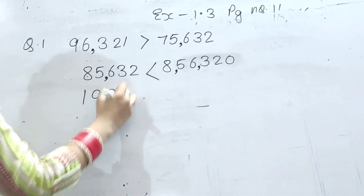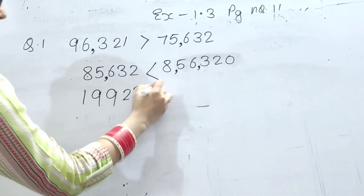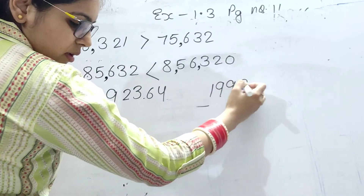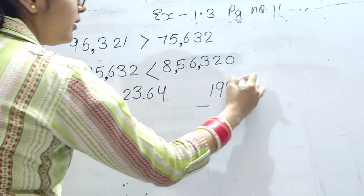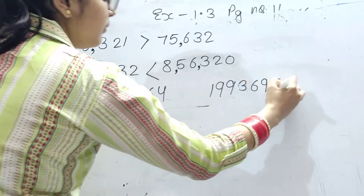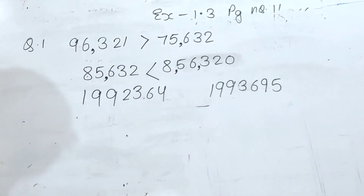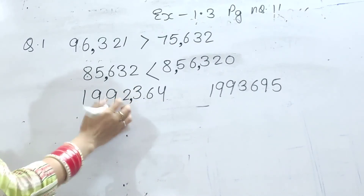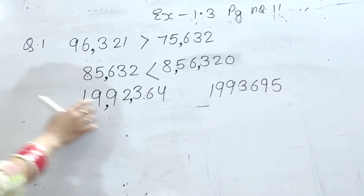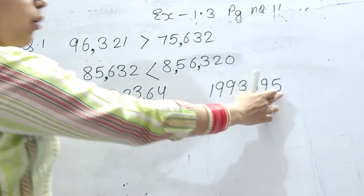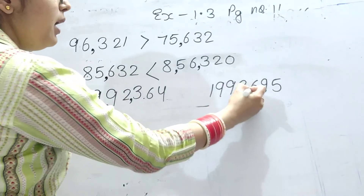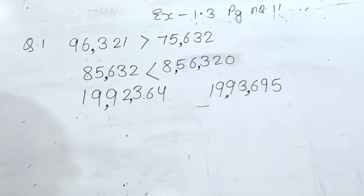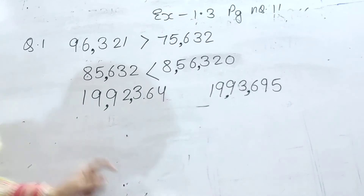Next: one nine nine two three six four, and one nine nine two three six nine five. Sab se pehle hume periods mark karenge. Ones, tens, hundreds, thousands, ten thousands, and lakh, ten lakh. Then same for the second number. Ab in dono me se kaun sa number bada hai?